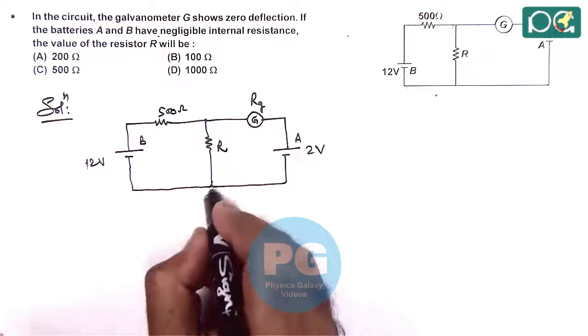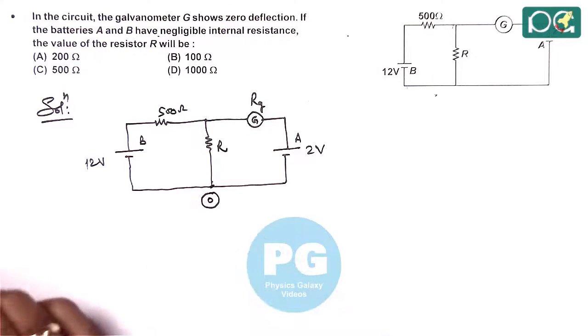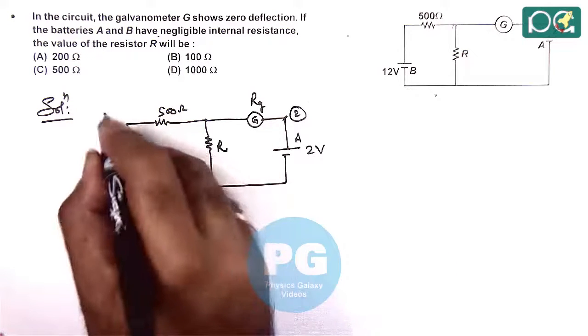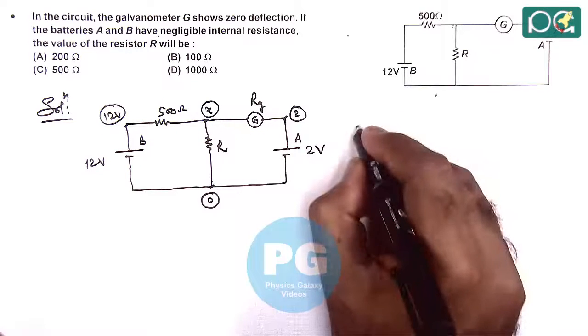If we distribute the potential and consider the potential at the bottom point to be zero volts, then the potential here will be 2 volts, the potential here will be 12 volts, and at this point we can consider the potential to be X.